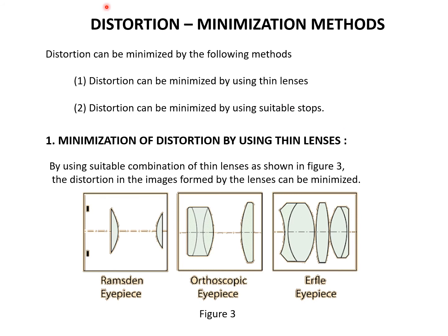As distortion is a defect, it has to be minimized. There are two minimization methods. One is the distortion can be minimized by using thin lenses, and distortion can be minimized by using suitable stops. By using a suitable combination of thin lenses, the distortion in the image can be minimized. These are the lens arrangements in the case of the Ramsden eyepiece, the orthoscopic eyepiece, and the Erfle eyepiece — all using thin lenses.